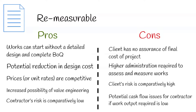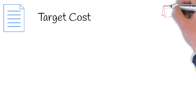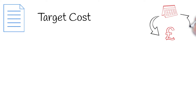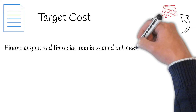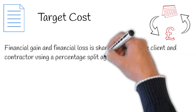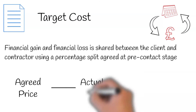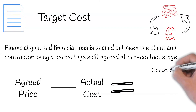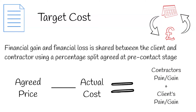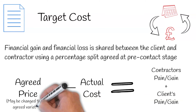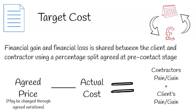There are potential cash flow issues for the contractor if work output required is low. Finally, we have target cost contract. You could say this contract is a hybrid of both lump sum and cost reimbursable. Essentially, a contractor will be reimbursed for the actual cost on an interim basis, similar to cost reimbursable. However, what makes target cost different is that the financial gain and financial loss is shared between the client and contractor using a percentage split agreed at pre-contract stage. This is calculated by taking the agreed price and deducting the actual cost incurred. The difference is then split between parties by the agreed percentages — sometimes this is 50-50. The agreed price may be changed through variations during a project, and financial gain or pain is usually calculated once works are complete and reflected in the final payment or final account.